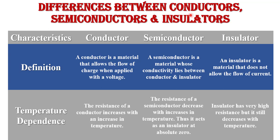Now I will explain the differences between conductor, semiconductor, and insulator based on their characteristics. First, definition: a conductor is a material that allows the flow of charge when applied with a voltage. A semiconductor is a material whose conductivity lies between conductor and insulator. An insulator is a material that does not allow the flow of current — it blocks the flow of current. Next, temperature dependency: the resistance of a conductor increases with increase in temperature. The resistance of a semiconductor decreases with increase in temperature, and it acts as an insulator at absolute zero. An insulator has very high resistance, but it still decreases with temperature.